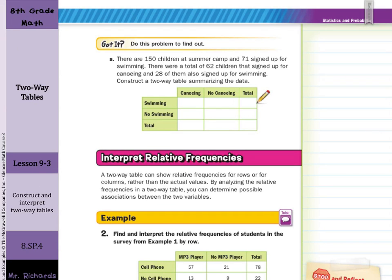There are 150 children at summer camp and 71 signed up for swimming. There were a total of 62 children that signed up for canoeing and 28 of them also signed up for swimming. Construct a two-way table summarizing the data. Well, let's write in the numbers we're given.